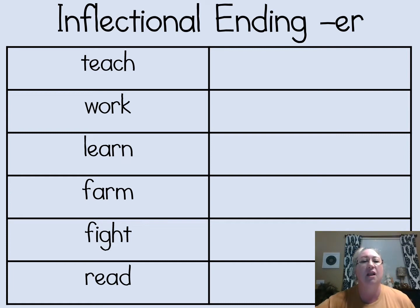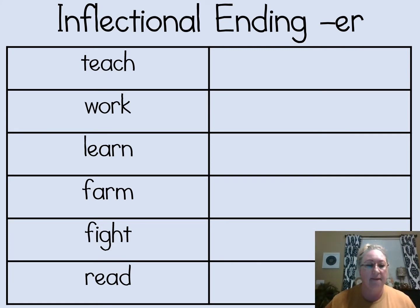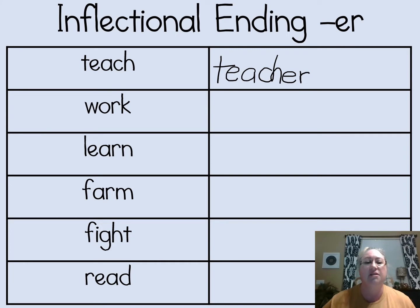Okay, let's start. Let's look at the first example. The action word is teach. Teach is something that you do — it's a verb. I can change the verb teach into a noun like this. So teach — I'm going to write teach again — and if I add E-R on the end of the word, teach becomes teacher. Now it's a noun.